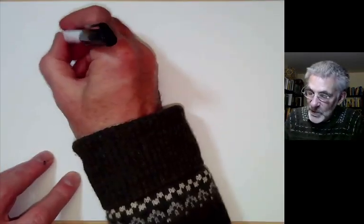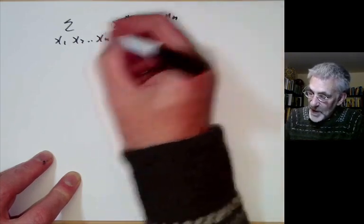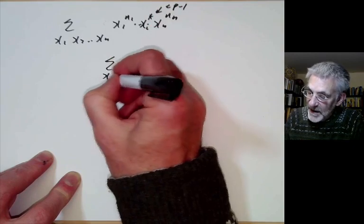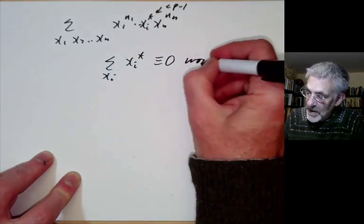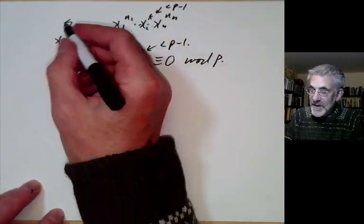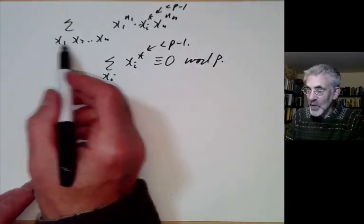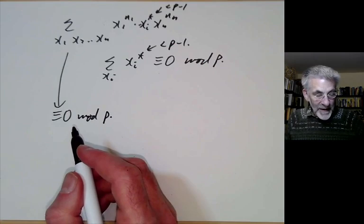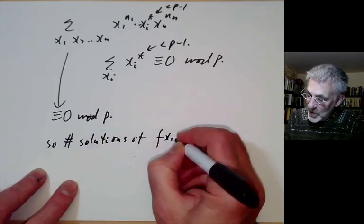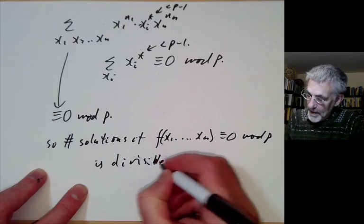But then if we take sum over x1, x2 up to xn of x1^n1 up to xn^nn, there will be some xi whose exponent here is less than p-1. But then the sum over xi of xi to the something will be congruent to 0 mod p by the useful lemma we had here, because this exponent is now less than p-1. And this means that this huge sum here will all be congruent to 0 mod p, because for any choice of exponents, the sum over all the xi's will be 0 mod p. So this proves the Chevalier-Warning theorem. The number of solutions of f(x1...xn) ≡ 0 mod p is divisible by p.